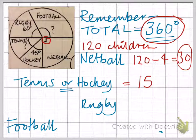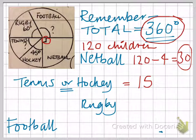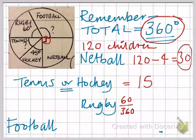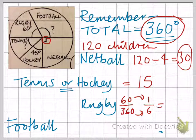Now rugby is a bit of a challenging one because we've got 60 degrees. To do that, we need to write that as a fraction. We've got 60 out of the 360 degrees taken up by rugby. If we simplify this, we can divide the top and the bottom by 60 to get 1 over 6, or one sixth. It's one sixth of the circle, so the 120 children total divided by 6 gives us 20. That's quite a challenging one.